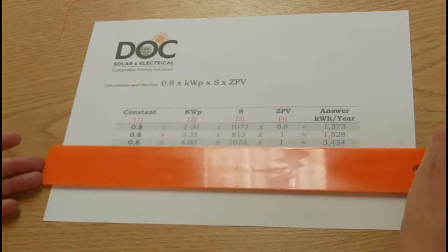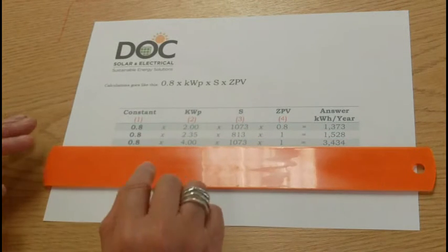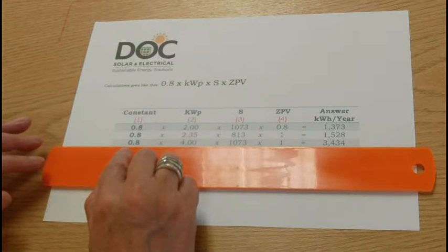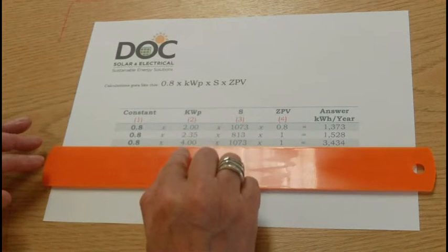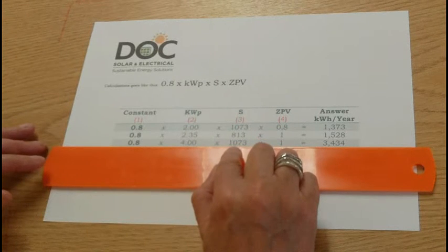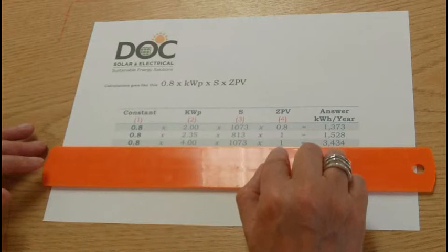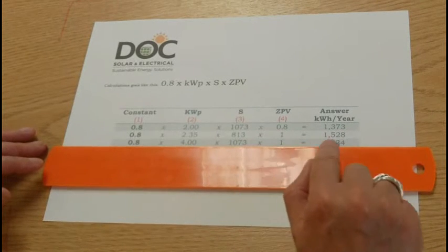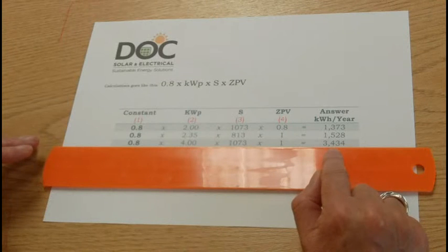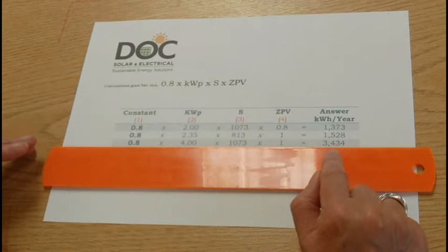Now your 16-panel system, or 4 kilowatt system, in an ideal world, you would have 4 kilowatts facing south. You then take your constant of 0.8, times it by 4 for the 4 kilowatts, times it by 1073 for the southerly orientation, times it by 1, because it has no overshading. That will give you an annual estimated output of 3,434 kilowatt hours per year.